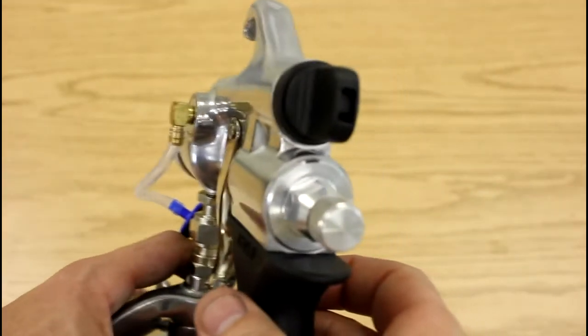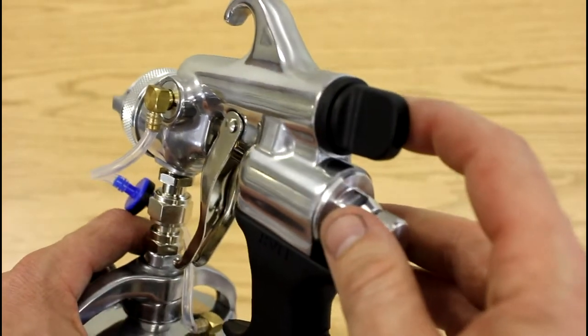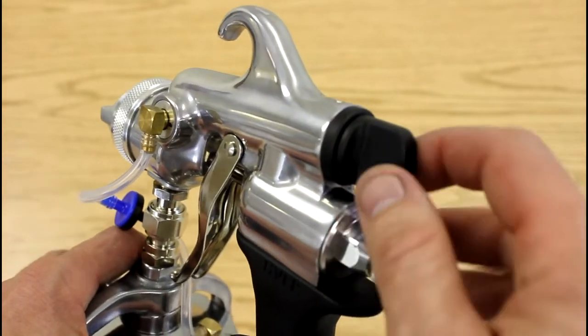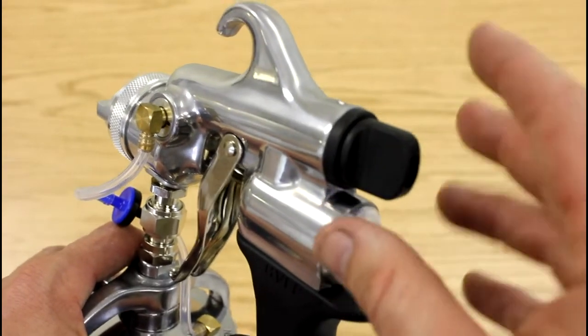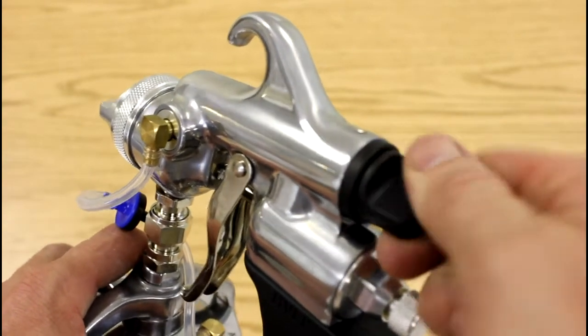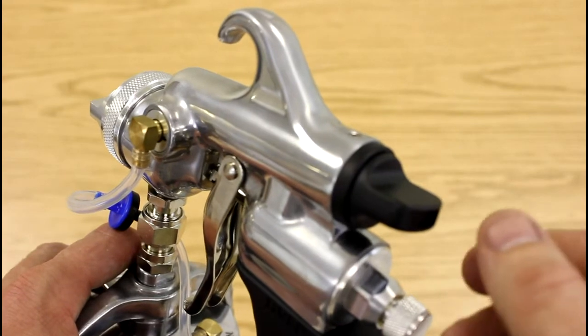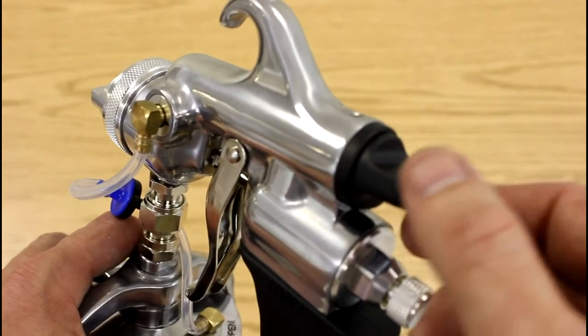On the back of the gun here they have two knobs. We'll start off with the top knob. This is your fan control knob and when it's in a vertical position this gives you its widest spray fan and then turning it horizontally will give you your smallest or narrowest spray fan.